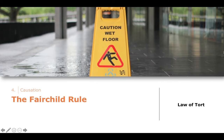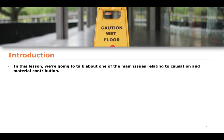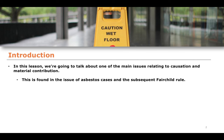In this video, we're going to continue talking about causation for the law of torts, focusing on this idea known as the Fairchild Rule, which represents something of an exception to material contribution in establishing causation. This is one of the main issues relating to causation and material contribution, because it is a very limited rule. It is limited to, at least in terms of the facts of the case, asbestos cases, though similar circumstances might also merit its application.